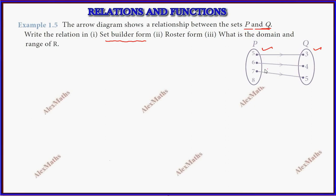The value decreases by 2. So first, the set builder form: R equals {(x,y) such that y equals x minus 2, where x belongs to P and y belongs to Q}. This is the set builder form.